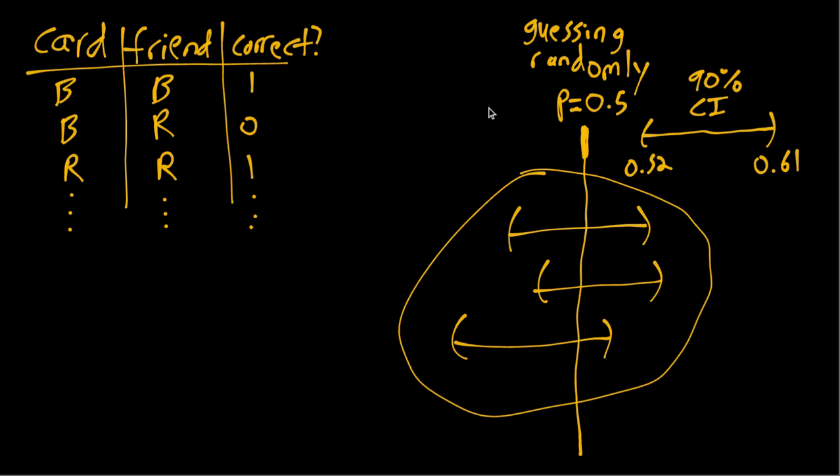So it's important to remember, even though 90% sounds like it's close to 100%, it is not actually 100%. So it's always possible that our interval does not contain the true value.